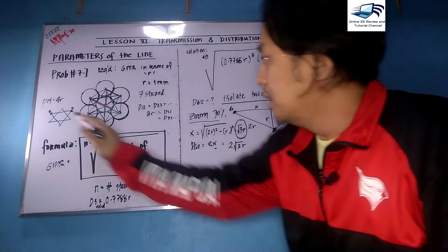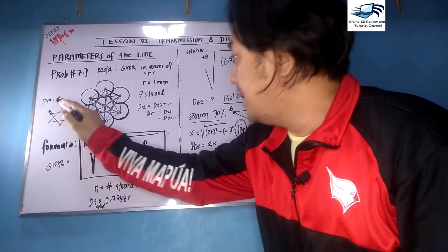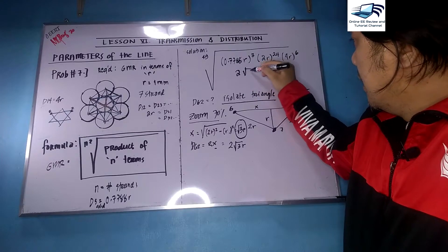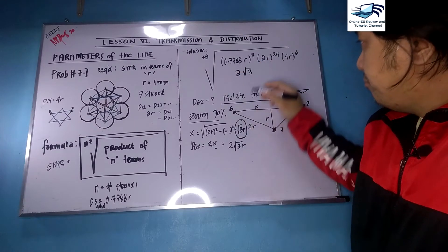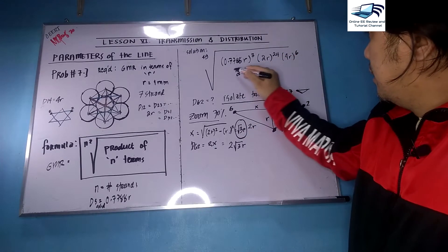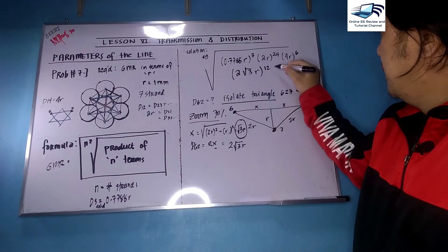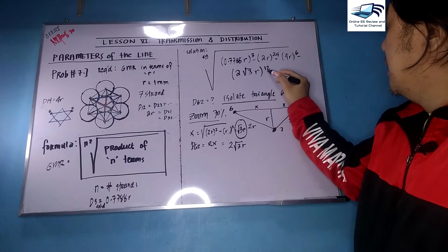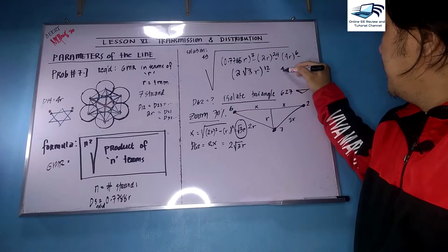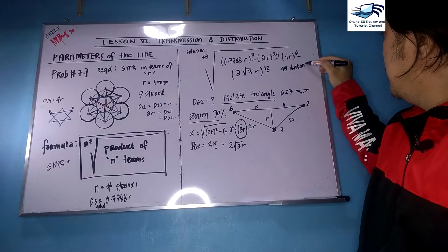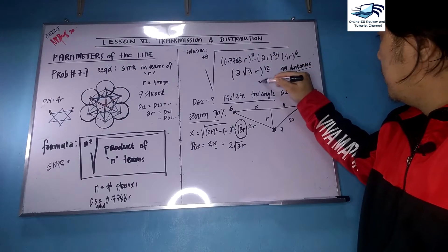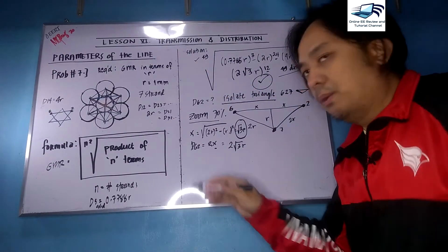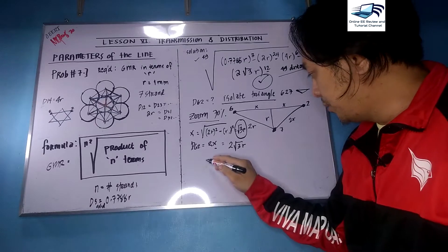Counting all those long diagonal lines: one, two, three, four, five, six — that is six lines, and six times two is 12. So we have 12 distances of 2√3·r. Checking the total: 24 plus 6 is 30, plus 7 is 37, plus 12 is 49 distances — correct! Big check.